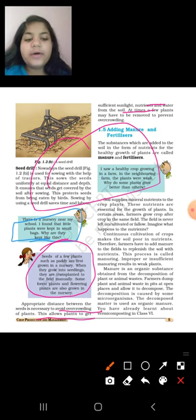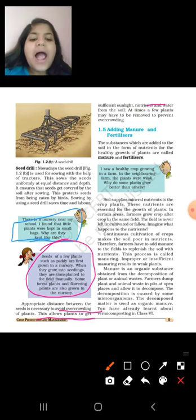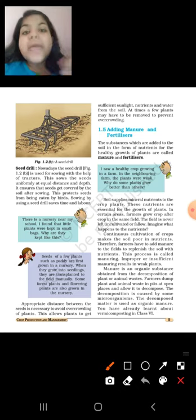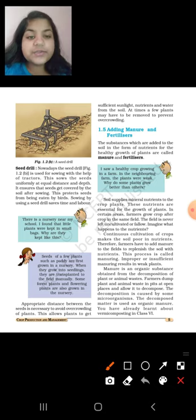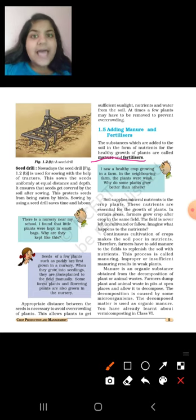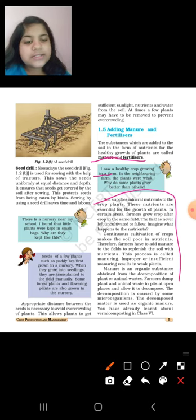Adding manure and fertilizers. What is manure and fertilizers? Manure is an organic substance which creates the substance and helps in the better growth of a plant. The substances which are added to the soil in the form of nutrients for the healthy growth of plants are called manure and fertilizers. I saw a healthy crop growing in a farm. In the neighboring farm the plants were weak. Why do some plants grow better than others?